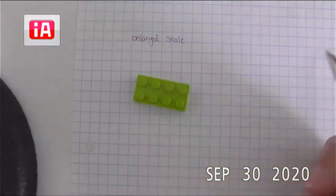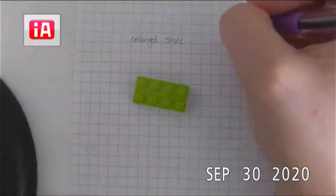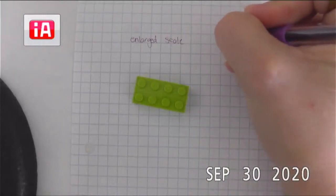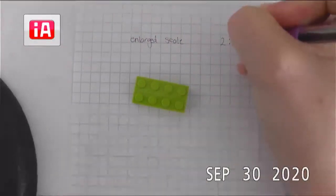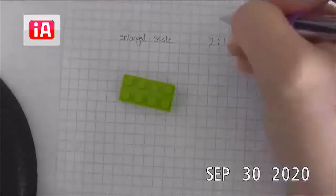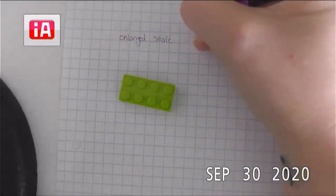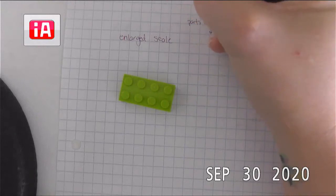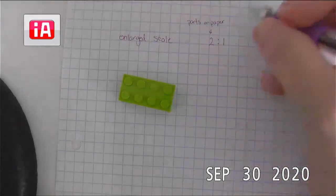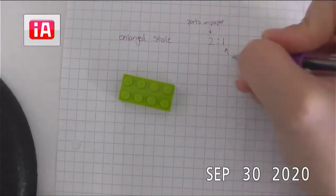Now for our enlarged-scale drawings, we will also see a ratio similar to our reduced scale. But this time we'll notice that the first number, which represents parts on paper, is larger than our parts in real life number.